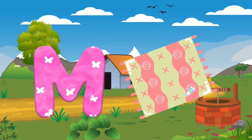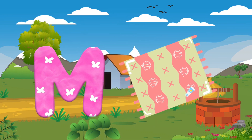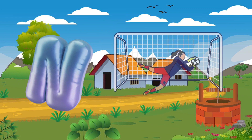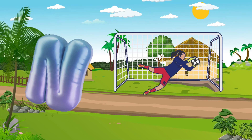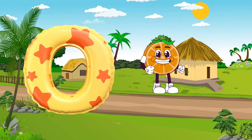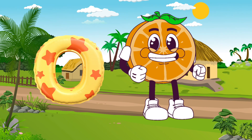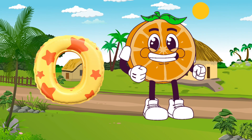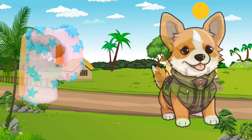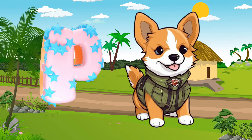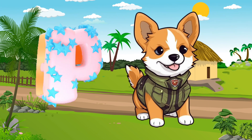M is for Mat, M-M-Mat. N is for Net, N-N-Net. O is for Orange, O-O-Orange. P is for Pet, P-P-Pet.